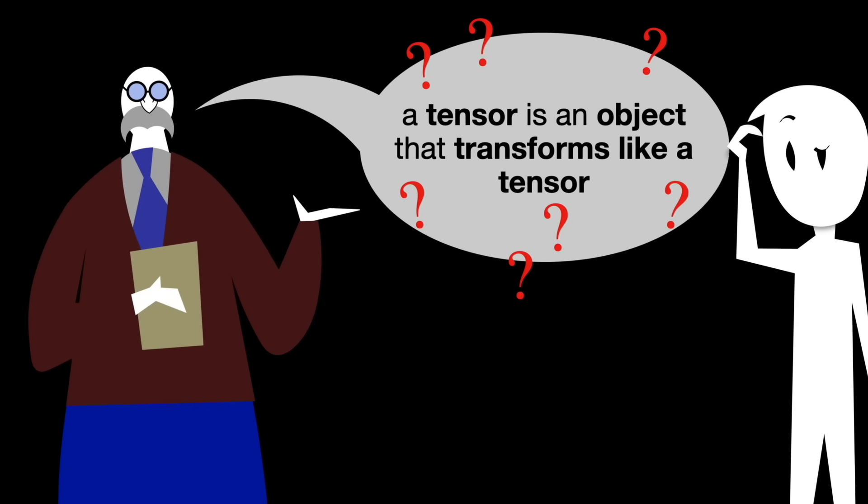The problem is that they are defining a tensor using the notion of tensor transformation. Which is weird, because if a student doesn't know what a tensor is, then they probably wouldn't know what a tensor transformation is as well. So what do people actually mean by this sentence?